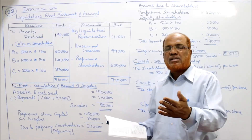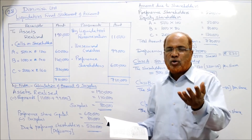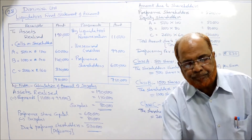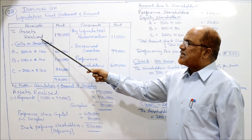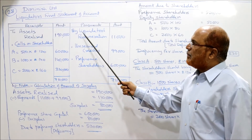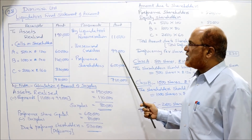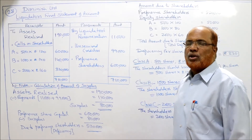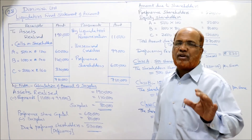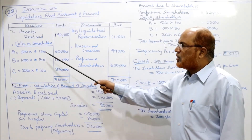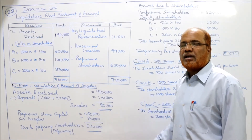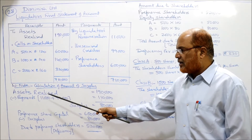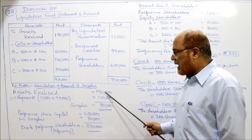After paying unsecured creditors, the remaining amount goes to shareholders — first preference shareholders, then equity shareholders. Prepare the liquidator's final statement of account. Receipts: assets realized Rs.1,90,000. Payments: liquidator's remuneration Rs.11,000 + unsecured creditors Rs.99,000 = Rs.1,10,000. In working notes, calculate surplus: Rs.1,90,000 minus Rs.1,10,000 = Rs.80,000 surplus available for shareholders.